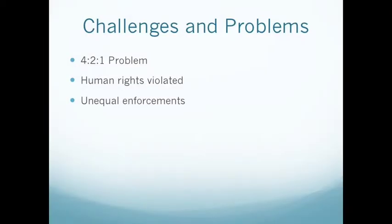As one can tell by now, the policy was not perfect and it definitely had its challenges. The most significant problem that came with the policy was the 4-2-1 problem. This problem states that one child must take care of two parents and four grandparents. This is a problem because the child may not be able to sustain his own life, let alone his parents and grandparents. Human rights were also violated with the implementation of the policy, including the violation of the right to freely determine the number of children one wants to have, as well as forcing women to submit to abortion and sterilization.